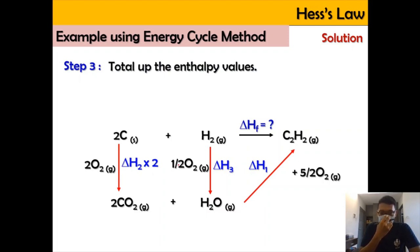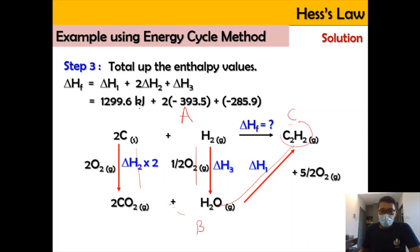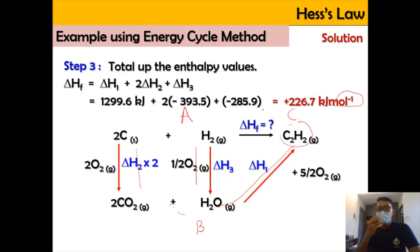Now we total up the enthalpy values. ΔHf = 2×ΔH₂ + ΔH₃ + ΔH₁, where everything goes in the same direction forming the product. That is Hess Law — A to C equals A to B plus B to C. So: ΔHf = +1299.6 + 2×(−393.5) + (−285.9) = +226.7 kJ mol⁻¹. Don't forget per mole, as it refers to one mole of C₂H₂.